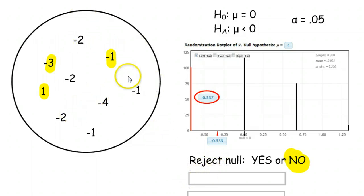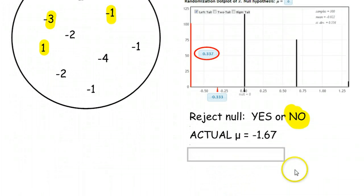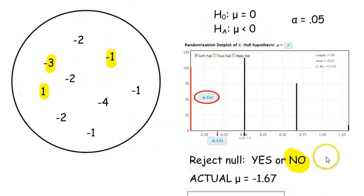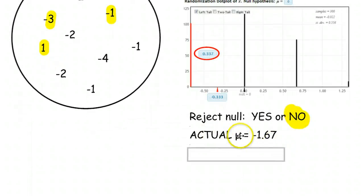However, what is the actual average of these numbers? As you can see, almost all of them are negative. So the actual mu is negative 1.67. That means that we made a mistake. We said, well, the null is probably fine. We don't have enough evidence to reject it, but we really should have rejected it. That's called a Type II error.